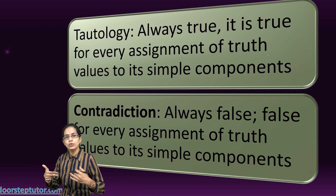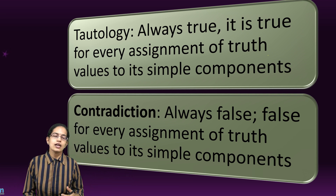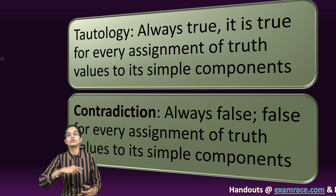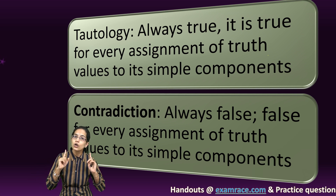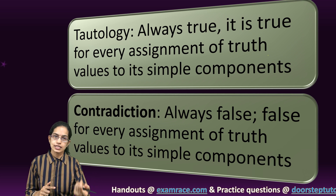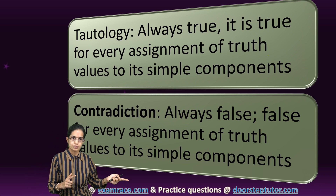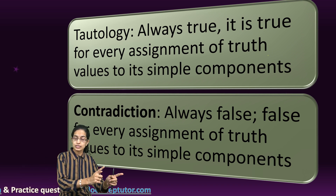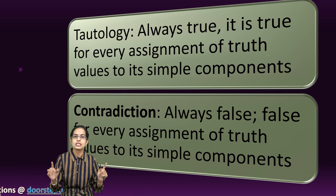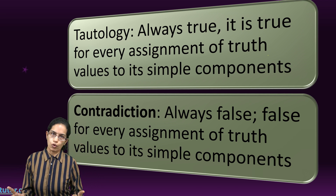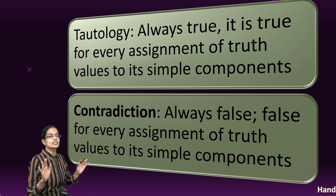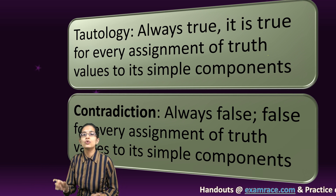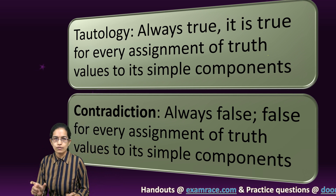For contradiction, let's say I make a statement: 'I respect you and I do not respect you.' Now this is a contradiction. Either I can respect or I cannot respect — there cannot be a condition where both hold simultaneously. So this is a contradiction and is always false. Tautologies are always true; contradictions are always false.